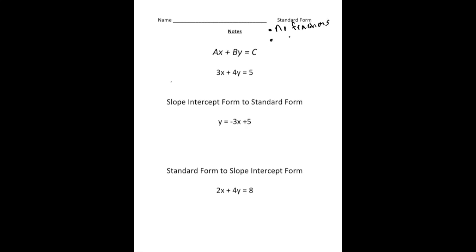Number two: there can be no decimals. And last but not least, the A value — the coefficient attached to x — has to be positive. So the A value has to be positive, and inside the whole equation there can't be any fractions or decimals.